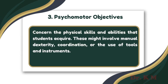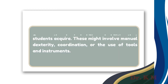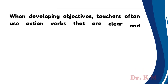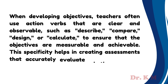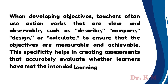3. Psychomotor objectives — these concern the physical skills and abilities that students acquire. These might involve manual dexterity, coordination, or the use of tools and instruments. When developing objectives, teachers often use action verbs that are clear and observable, such as describe, compare, design, or calculate, to ensure that the objectives are measurable and achievable.